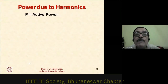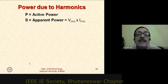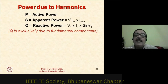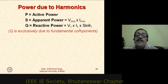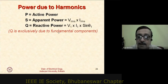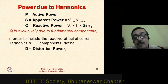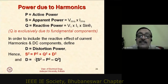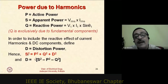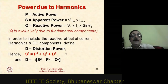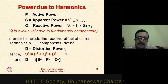For power flow due to harmonics: active power P and apparent power S are classical definitions. Reactive power Q is still defined as V₁·I₁·sin(θ₁) — harmonic effects are not included in Q. A new terminology, distortion power D, captures the harmonic contribution. The apparent power is redefined as S² = P² + Q² + D², where D is the distortion component. This is how harmonic effects are accounted for in the power system.